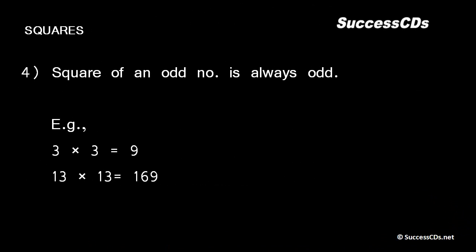Next, the square of an odd number is always odd. For example, 3² = 9, which is an odd number. 13² = 169, which is also an odd number.